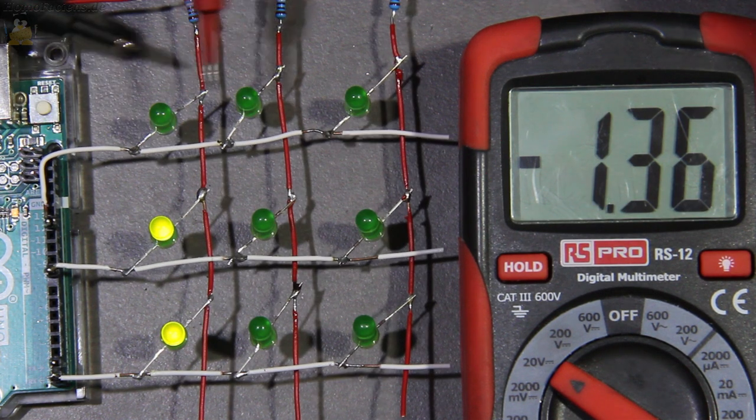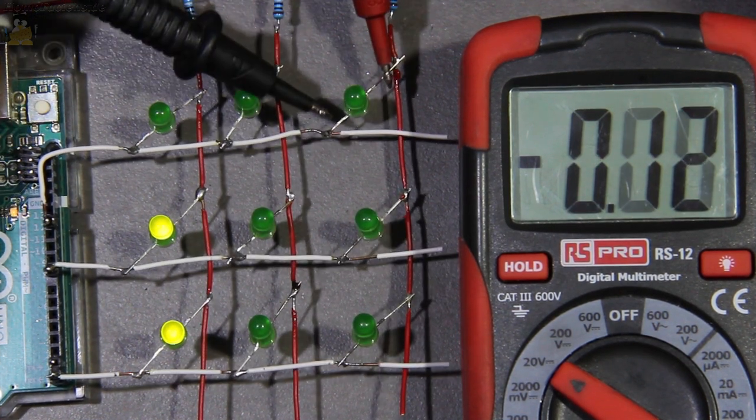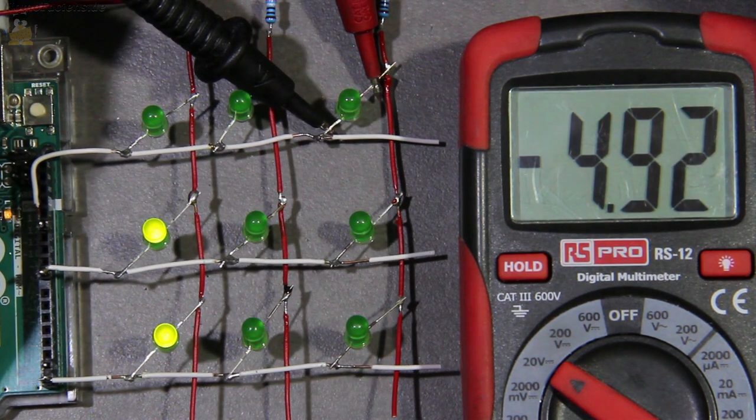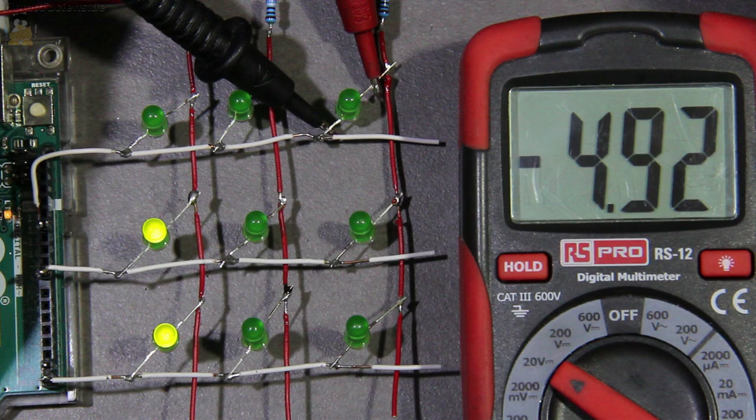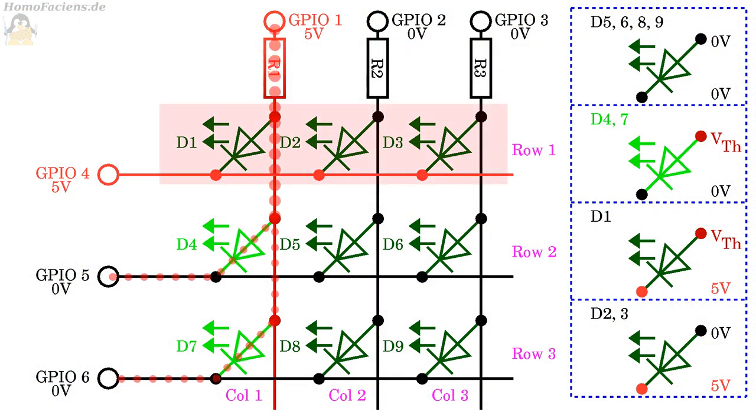Since GPIOs number 2 and 3 are switched to low signal, almost the entire logic voltage of around 5V drops in reverse direction at LEDs number 2 and 3, so they remain switched off. The matrix therefore only works with components that only allow current to pass in one direction, as is the case with LEDs, otherwise the loads D1, 2, and 3 would also be turned on.